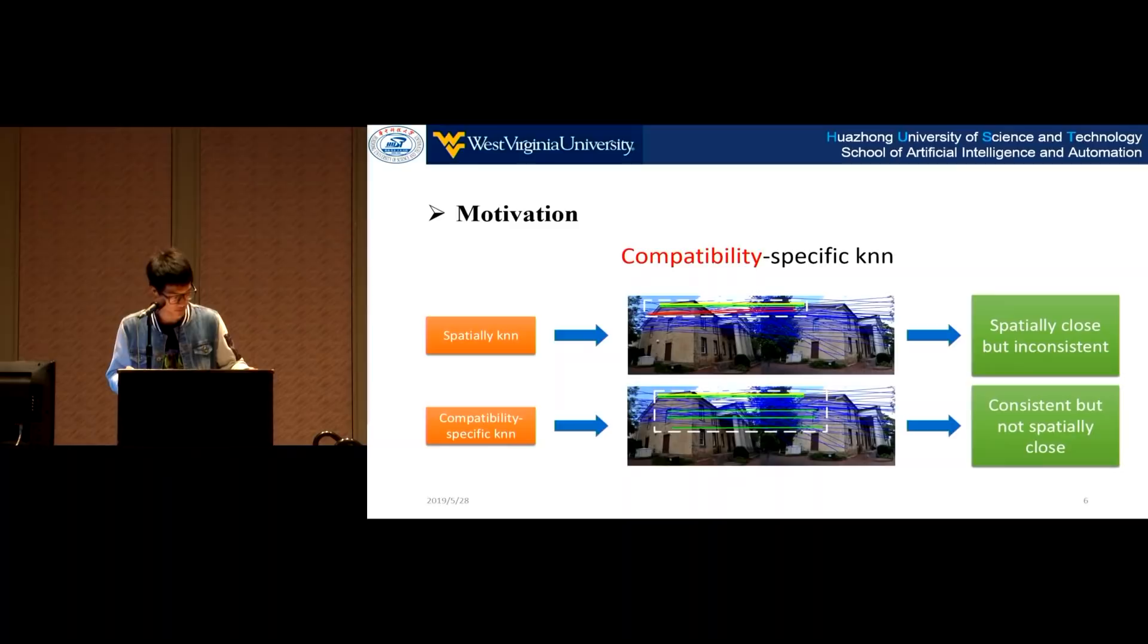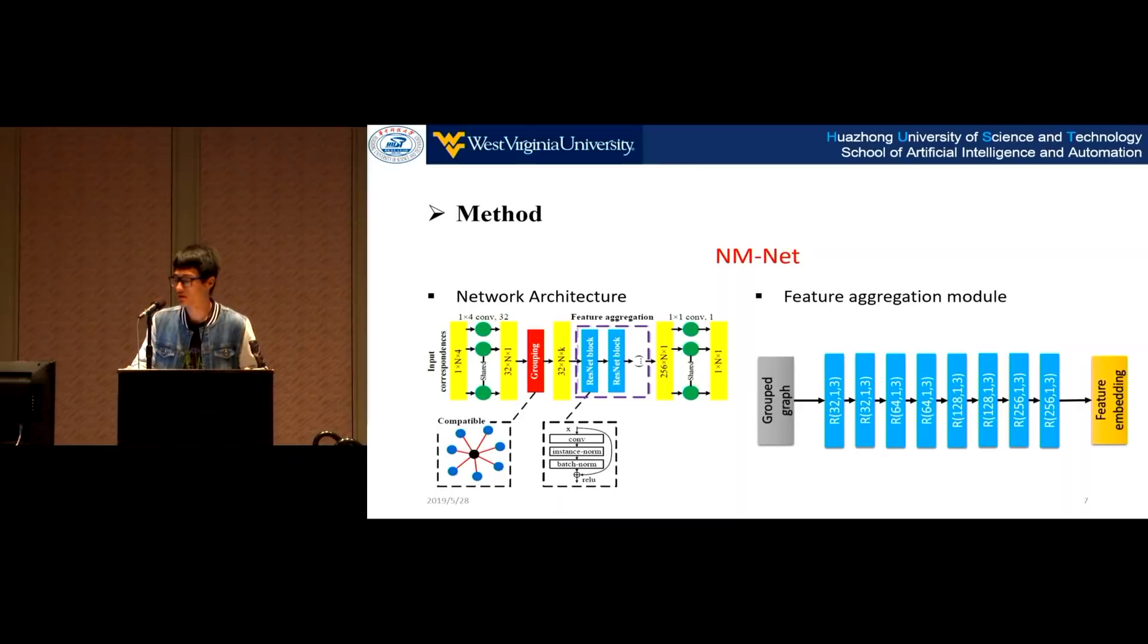However, directly using spatially local information for feature correspondence selection is not a good idea because the distribution of outliers is irregular. For a query inlier, there are many outliers contaminating the local regions around it. So the spatial adjacency is inconsistent and unreliable. Therefore, we present a compatibility metric to search for reliable neighbors for correspondences. This figure shows the difference between spatially KNN and our compatibility-specific KNN. The spatially selected K-nearest neighbors of an inlier are located in an adjacent region, but they are incompatible with two outliers included. By contrast, the neighbors picked by a compatibility metric are consistent, but their positions are not necessarily spatially adjacent to the query inlier.